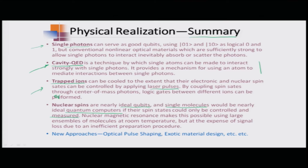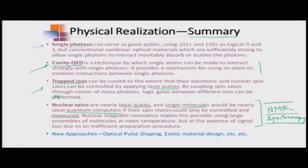Nuclear magnetic resonance makes controlling nuclear spins possible using large ensembles of molecules at room temperature, at the expense of signal-to-noise due to inefficient preparation. However, NMR is popular because NMR spectroscopy already exists as a routine technology for identifying molecules, and the spectrometer is a readily available machine that has been utilized for quantum computing. Today we will focus on NMR spectroscopy, starting from the basic principles of nuclear spins.